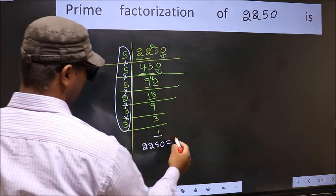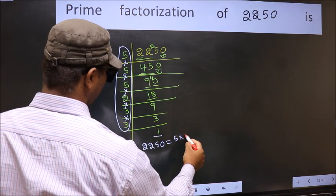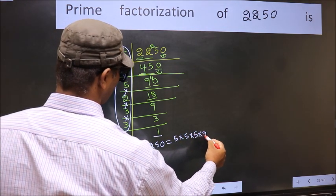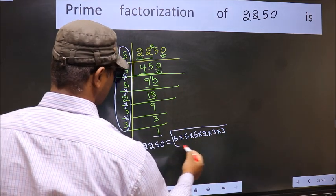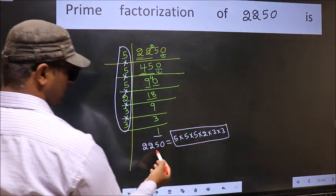So the prime factorization of 2250 is the product of these numbers. That is 5 into 5 into 5 into 2 into 3 into 3. This is the prime factorization of 2250.